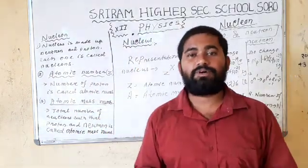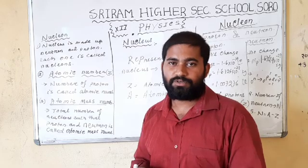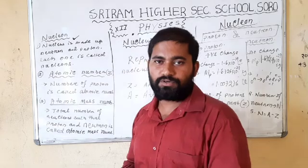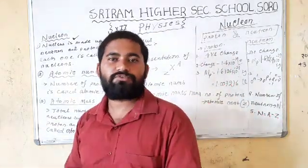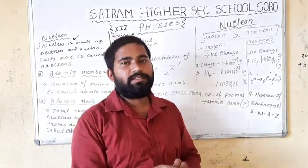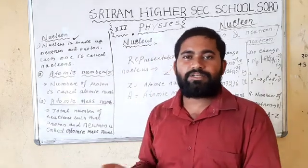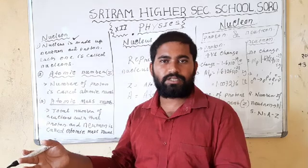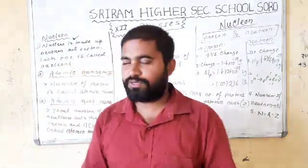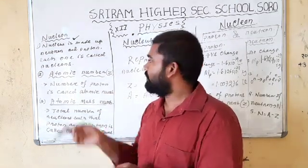The first important thing when we observe the nucleus is mainly the study of its constituents and various properties. If we observe the constituents of the nucleus, we find that as per Geiger and Marsden's experiment, the nucleus consists of a core of positive charge and there is a neutral particle that also exists inside the nucleus. The neutral particle is named as neutron and the positive charge particle is called proton. So the protons and neutrons combined are called nucleons. The nucleus is made of neutrons and protons, and each one — that is neutron and proton — is called a nucleon.